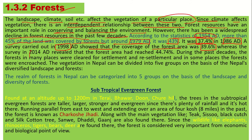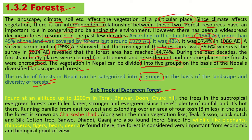A survey in 2014 AD revealed that the forest area had reached 44.74%. During the past decades, forests in many places were cleared for settlement and resettlement, and in some places the forest was encroached. The vegetation of Nepal is divided into five groups on the basis of landscape, diversified terrain, and forest. The forests of Nepal can be categorized into five groups based on landscape and diversity.